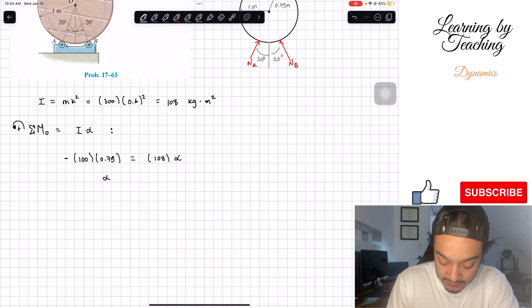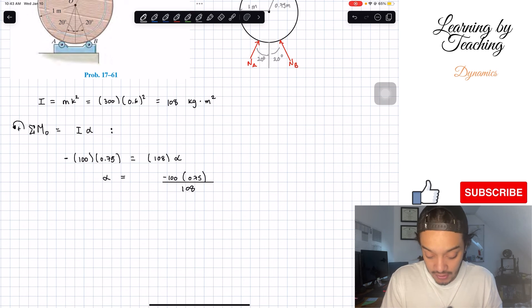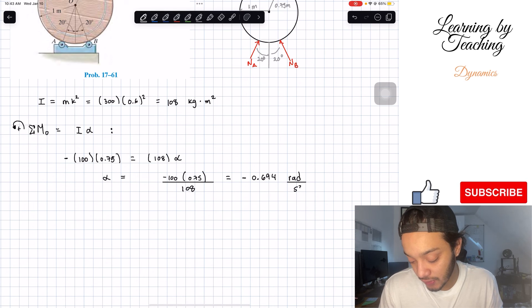Finally, we can solve for our angular acceleration. We're going to have negative 100 multiplied by 0.75 meters, all divided by 108. If we plug this into our calculator, we're going to get a total of negative 0.694, and the units should be in radians per second squared.